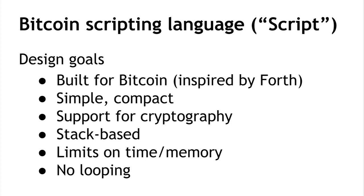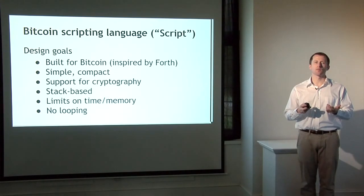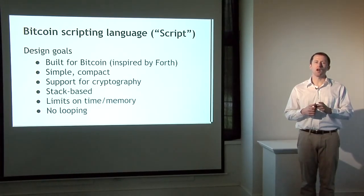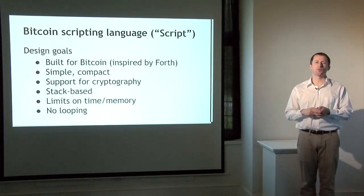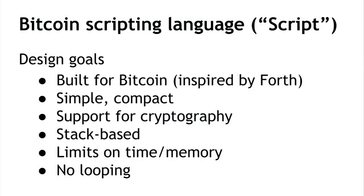The scripting language doesn't have a proper name — it's just called Script, or the Bitcoin scripting language — and it was built specifically for Bitcoin, most likely inspired by a language called Forth, an old stack-based simple programming language. The key design properties were simplicity and compactness, with support for sophisticated cryptography including special-purpose instructions to compute hash functions and verify signatures. Importantly, there are no loops in the Bitcoin scripting language. Every instruction is executed exactly once in a linear manner, so just by looking at the number of instructions you know exactly how long it will take to run.